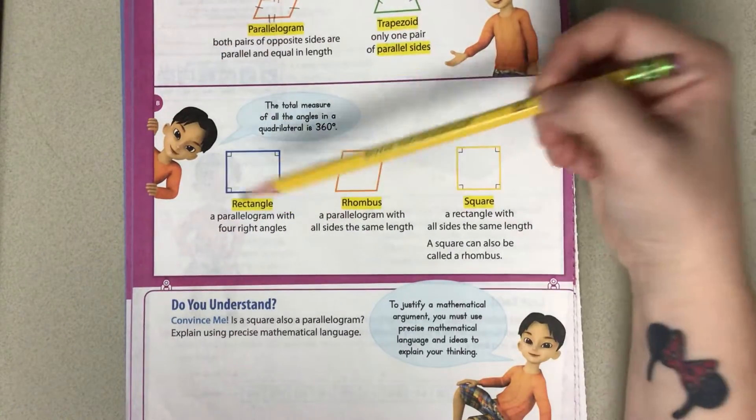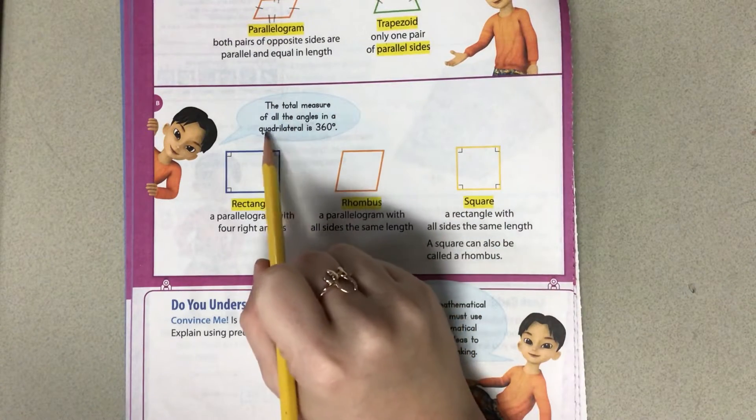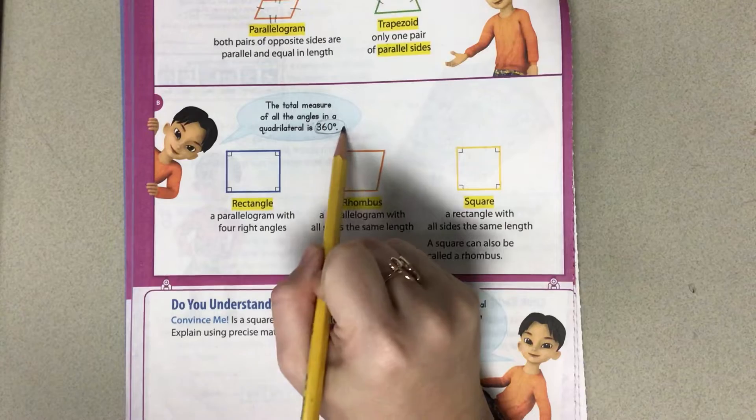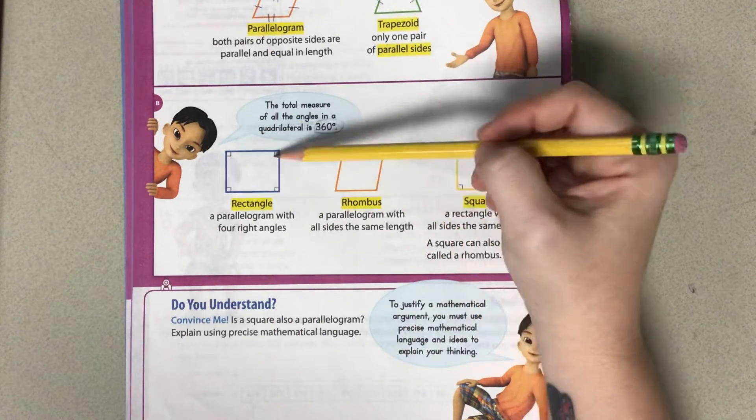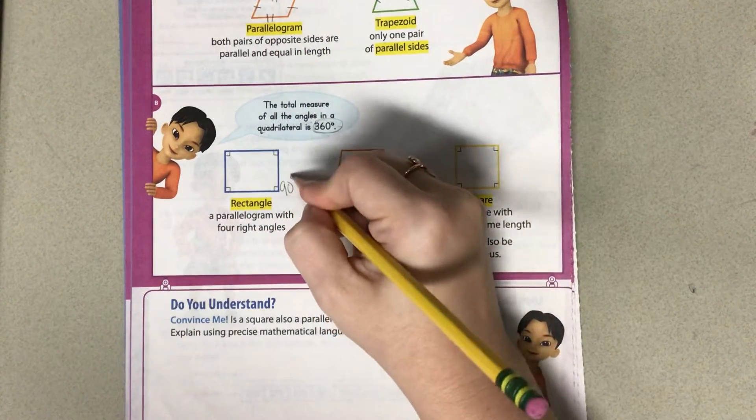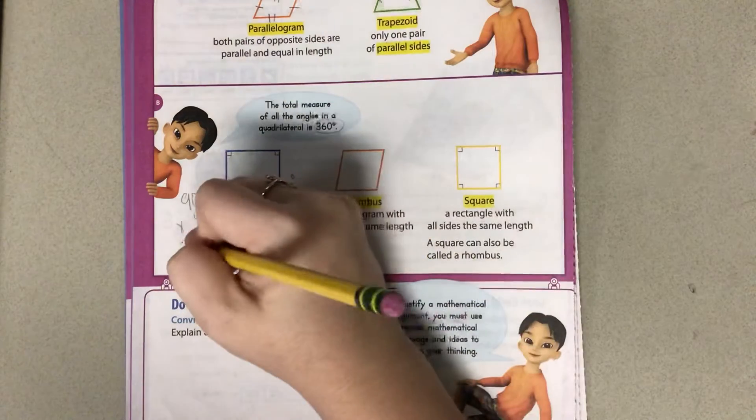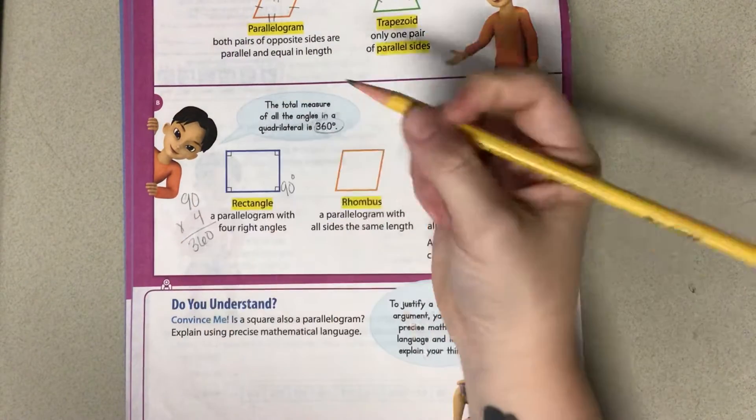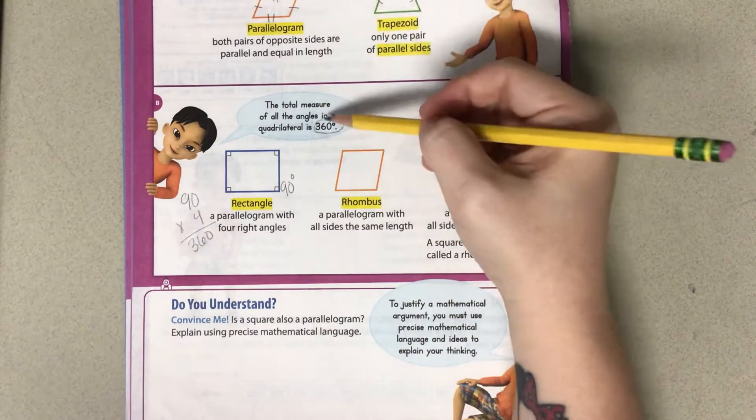We also have a rectangle. Any measure of angles in any quadrilateral is 360. As you see here, we have a rectangle, and all four corners are right angles, which means they're each 90 degrees. If I do 90 times 4, that gives me 360, which tells me that all four of these are that 360 degrees.